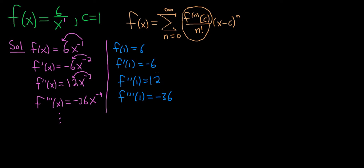So we have 6, negative 6, 12, negative 36. Not the most obvious pattern. So what do you do in a situation like this? Well, you just keep going.